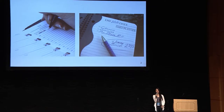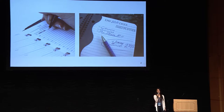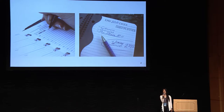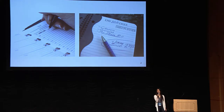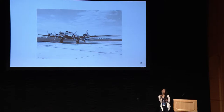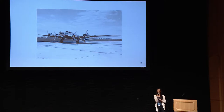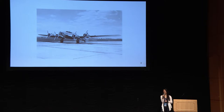Probably one of the most famous checklists comes from Boeing in the 1930s after a disastrous crash during a demo of one of their plane prototypes. Technically, the plane had been working fine, but the flight crew had forgotten to release the flight control locks.